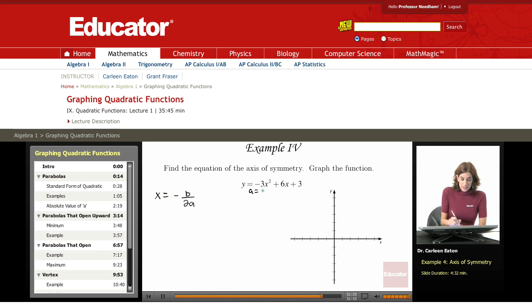a equals negative 3, and here b equals 6. So I go ahead and substitute in those values. x equals negative 6 over 2 times negative 3. That's going to give you negative 6 over negative 6. This equals 1. So the vertical line at x equals 1 is going to be the axis of symmetry.